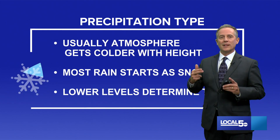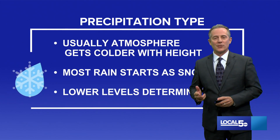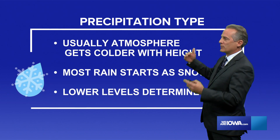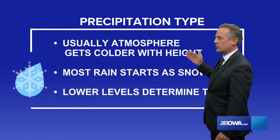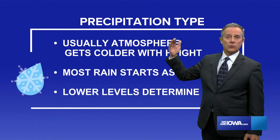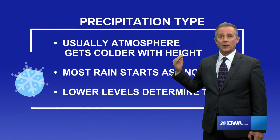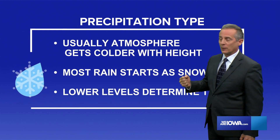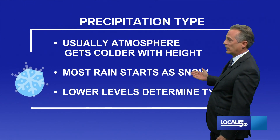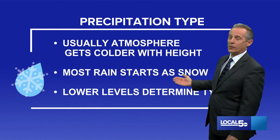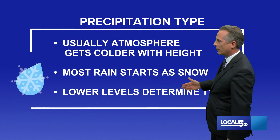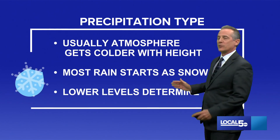What's really interesting is it usually starts off as snow because the atmosphere gets colder with height. The higher you go, generally the colder it gets, and up inside the cloud it is below freezing. That is why most rain actually starts as snow — and that's true even in the summertime.